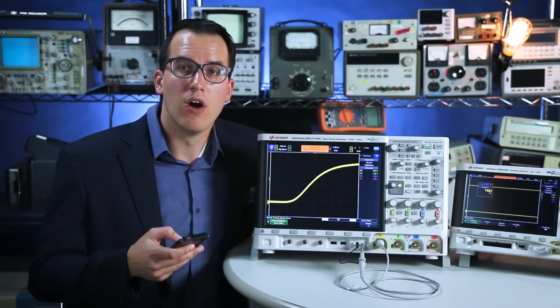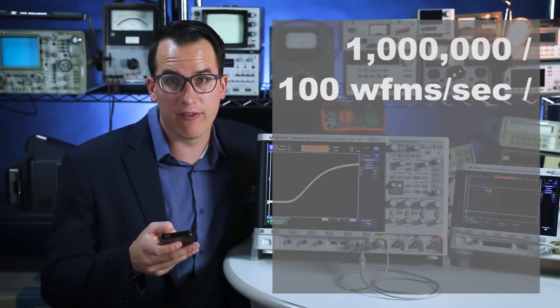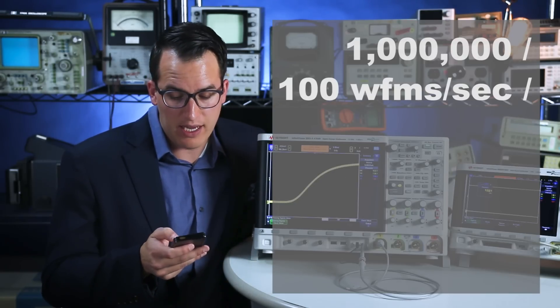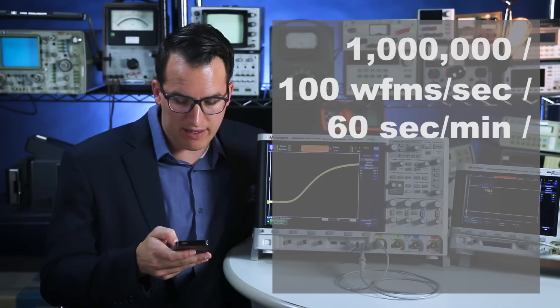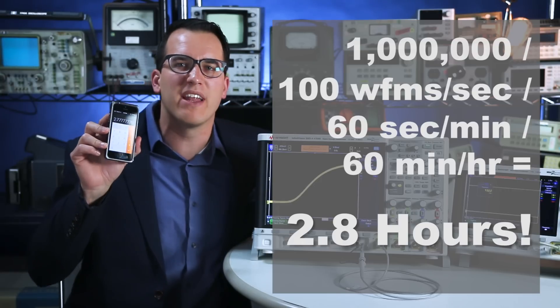There's a million edges that you're going to have to go through to find this glitch and you're going to have to go through it 100 waveforms at a time in a second. Then you divide that by 60 seconds in a minute, divide it by 60 minutes in an hour. It's going to take you 2.8 hours to see that glitch.